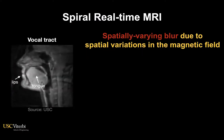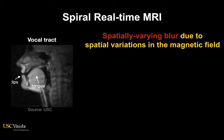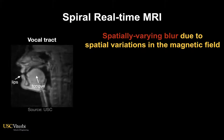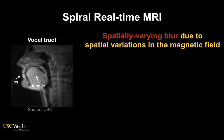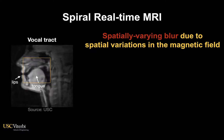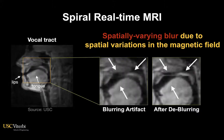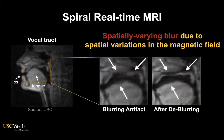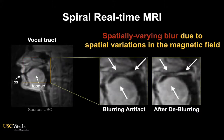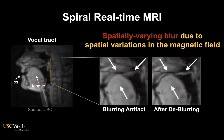However, a fundamental limitation of spiral real-time MRI is that it suffers from spatially varying blur that is based on spatial variations in the magnetic field. This blurring is spatially varying and is most severe at the articulator boundaries.